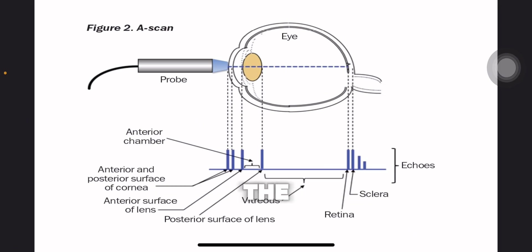In ophthalmology, or the study of the eye, A-scans are particularly useful for measuring the axial length of the eye, which is crucial for calculating the power of intraocular lenses implanted during cataract surgery.